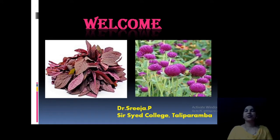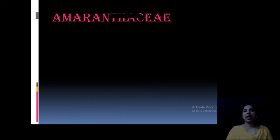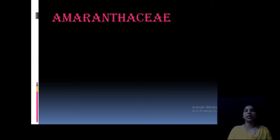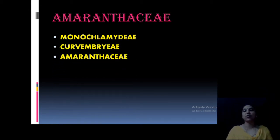Welcome back. Today we are moving to the second family of Monochlamydiae, that is Amaranthaceae. We already studied Euphorbiaceae under Monochlamydiae. Now we are moving to discuss the second family in your syllabus, Amaranthaceae. The peculiarity of this family is that they are monochlamydous — we cannot differentiate into sepals and petals. Its systematic position is: Monochlamydiae, Curvembryae series, and Amaranthaceae.